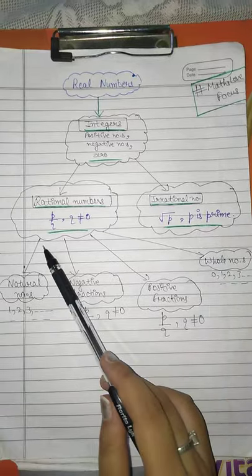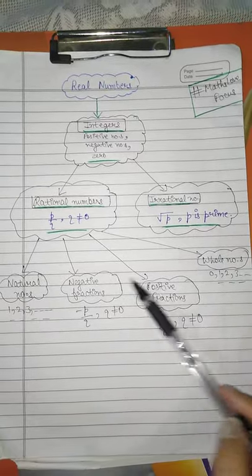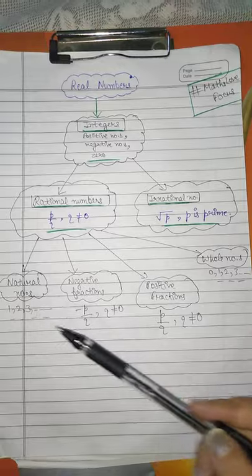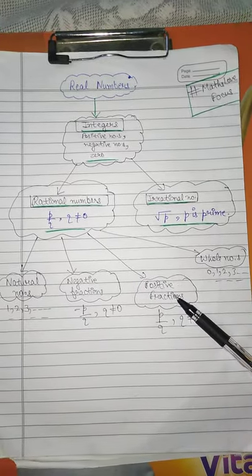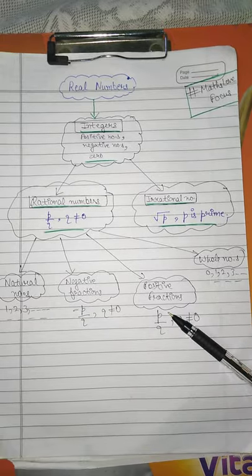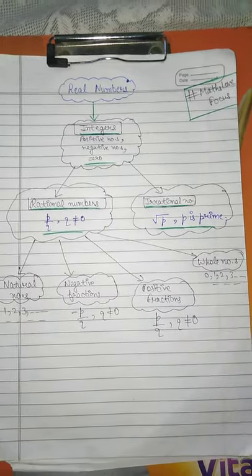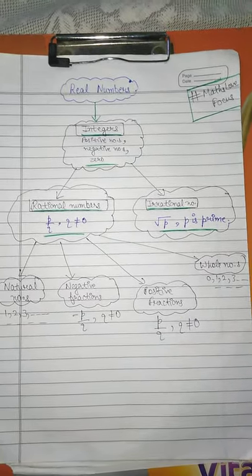Natural numbers are also rational numbers. Negative fractions, positive fractions, and whole numbers - all of these are rational numbers. Thank you.